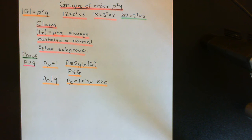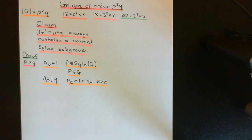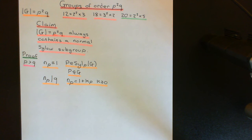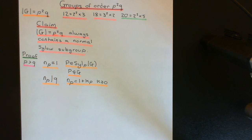So there's no chance that if k is greater than zero, 1 + kp will divide q. The only option is that the number of Sylow-p subgroups equals 1. The first Sylow theorem guarantees we have one, and this unique Sylow-p subgroup of order p squared is a normal subgroup inside G. Hence we've proven the theorem in case one — if p is strictly greater than q. Case one is done very easily.